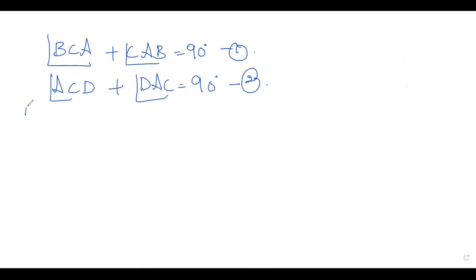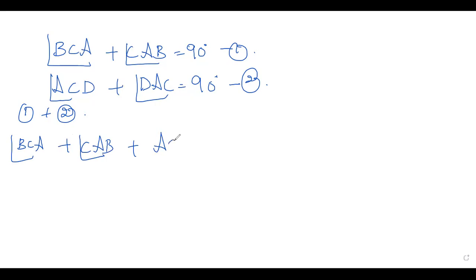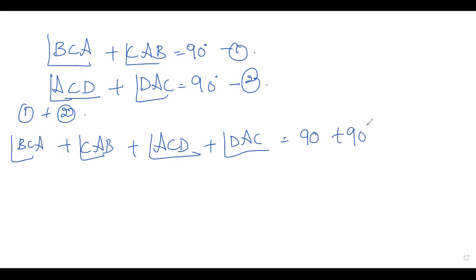From equations one and two, add both equations. Left hand side: angle B, C, A plus angle C, A, B plus angle A, C, D plus angle D, A, C is equal to 90 plus 90.